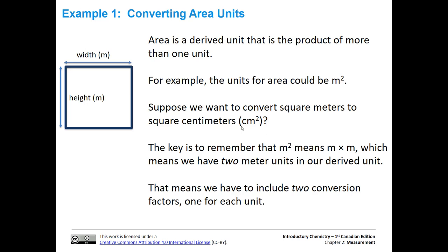One unit for area could be meters squared, could also be centimeters squared. But the key here is to remember that meters squared actually means meter times meter, which means we have two meter units in our derived unit. The big key that goes with that is that we also need two conversion factors, one for each unit. You have to cancel all of them out in order to get to your new unit.